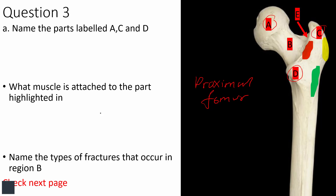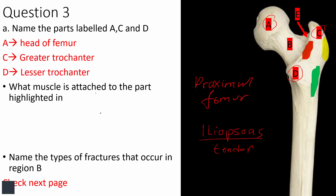If asked which muscle attaches to the lesser trochanter, remember iliopsoas — it is actually a common tendon for iliacus and psoas major. So two muscles attach there via the common iliopsoas tendon. The quadrate tubercle along the intertrochanteric crest, highlighted in red, is where quadratus femoris — not quadriceps — attaches.